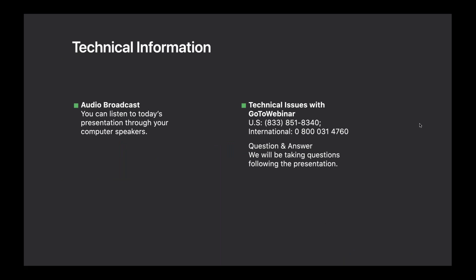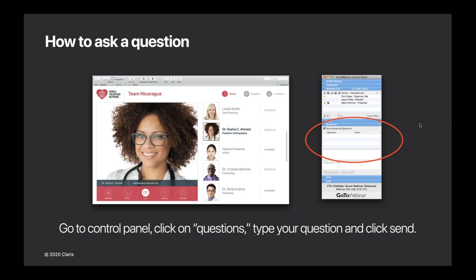Before we dive in, I have some brief housekeeping notes. If you have any technical issues with GoToWebinar, please contact technical support at 833-851-8340. Outside of the US, please call 0800-031-4760. During today's presentation you'll have an opportunity to type in questions. Go to the control panel, click on the question section, type in your question, and click the send button. We'll cover as many questions as time allows at the end of our presentation.